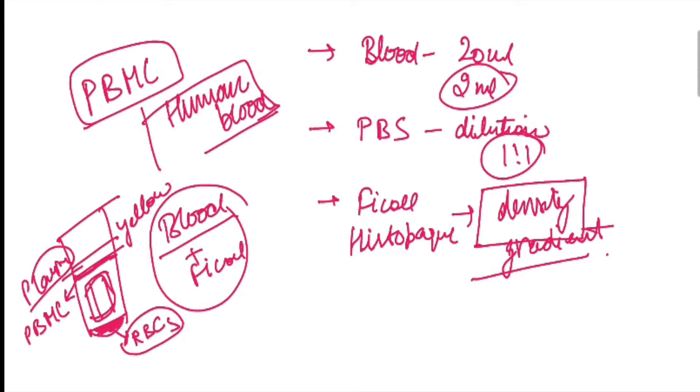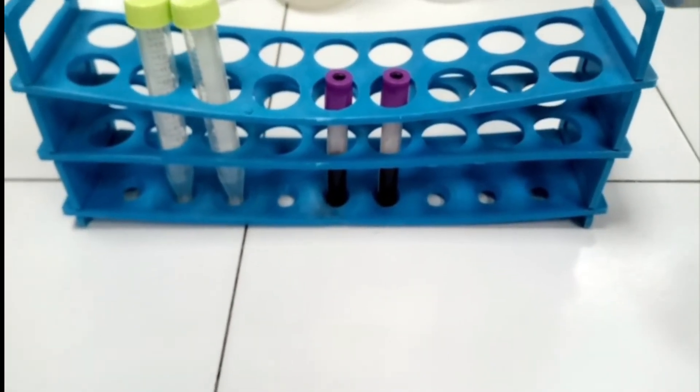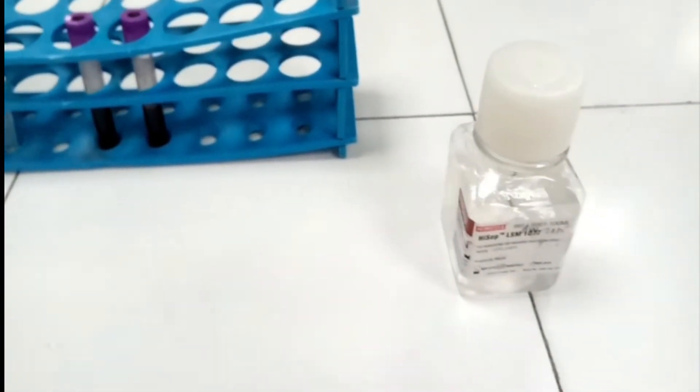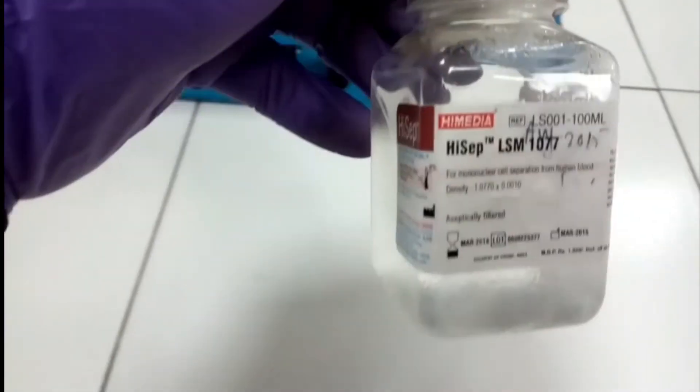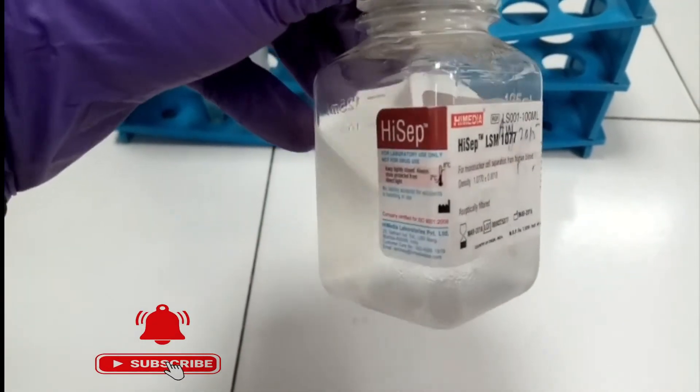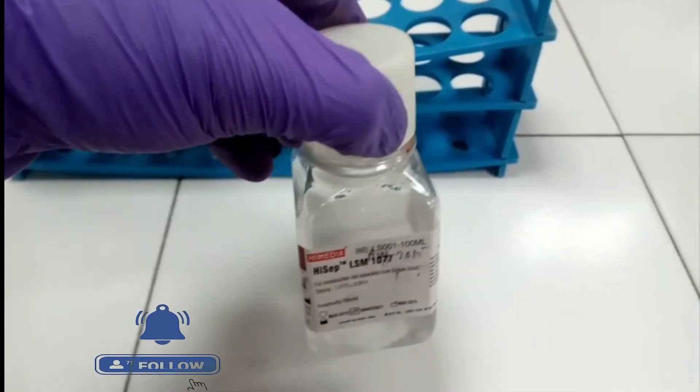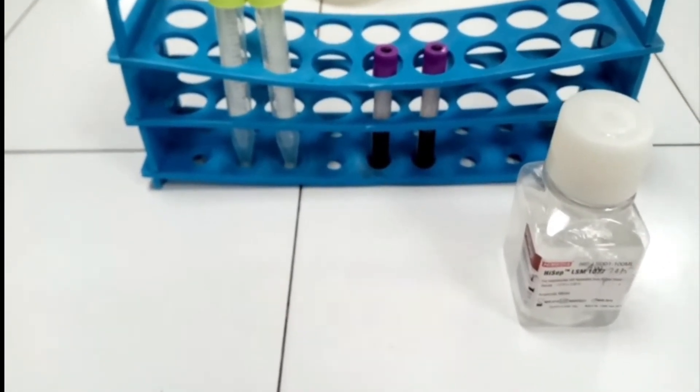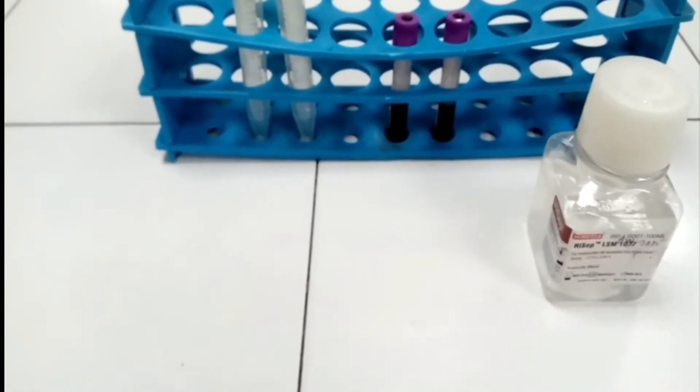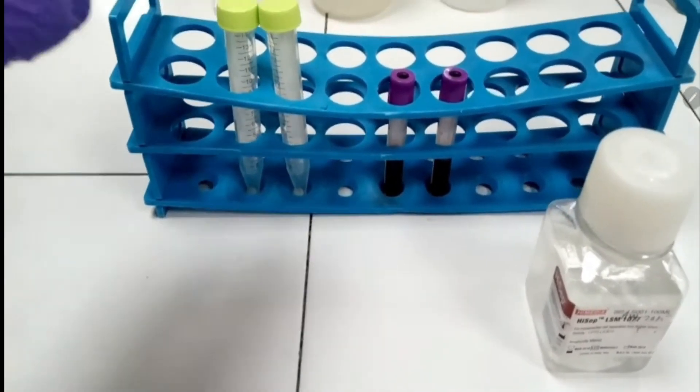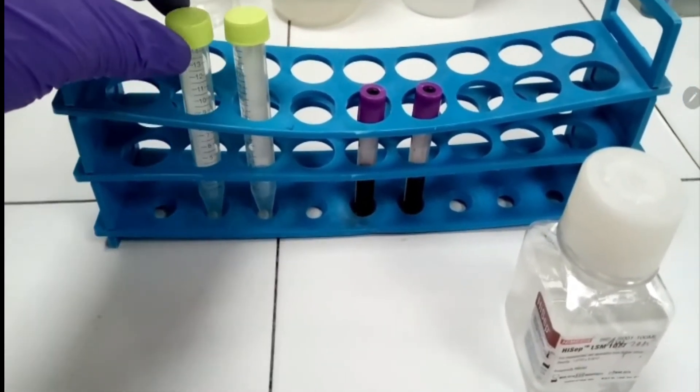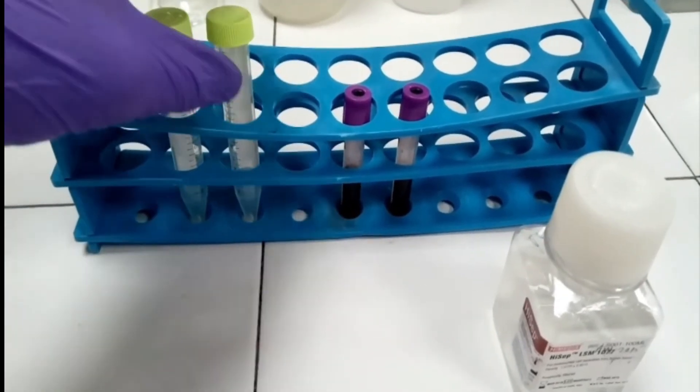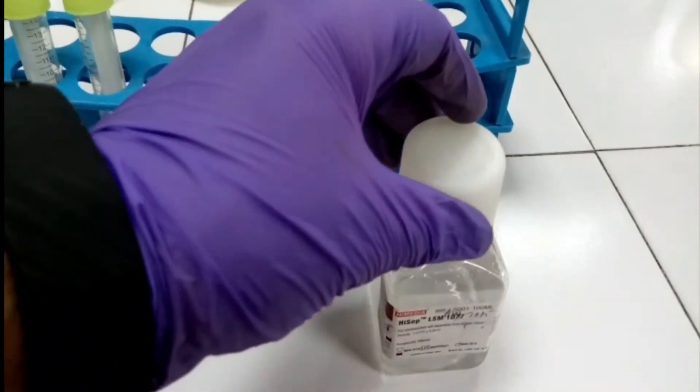Now let's move to the actual lab experiment. As you can see, I've collected human blood in these EDTA vials so that the blood doesn't coagulate. This is Histopaque or Ficoll, which will function for density gradient centrifugation. We have two 15 ml falcons in which we'll add PBS, dilute the blood, and then add Ficoll.